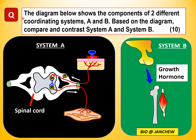Now let's discuss a hot exam question. The diagram shows the components of two different coordinating systems, A and B. The question asks to compare and contrast system A and system B for 10 marks. In system A, we see the spinal cord and a pin pricking the skin, with afferent neuron, interneuron, efferent neuron, and muscle shown. This is a reflex action — the withdrawal of the hand from a sharp or painful object. The coordinating system involved is the nervous system.